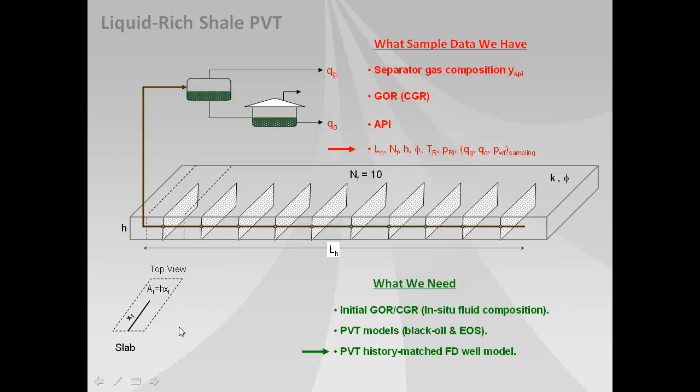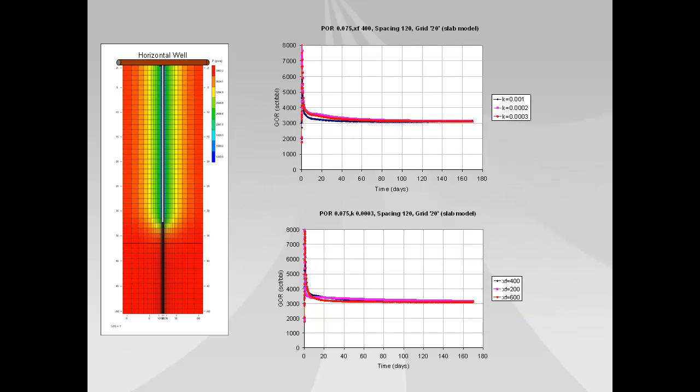Now one of the things that you will have to make a decision about is the fracture geometry because what we found is that the gas oil ratio variation in time can have a significant difference between slab type fracture networks or fracture geometry as shown here.